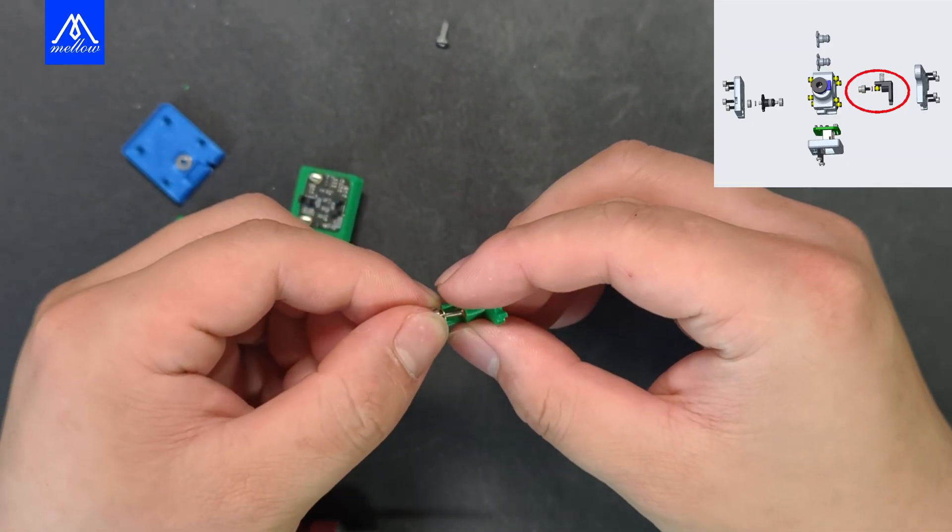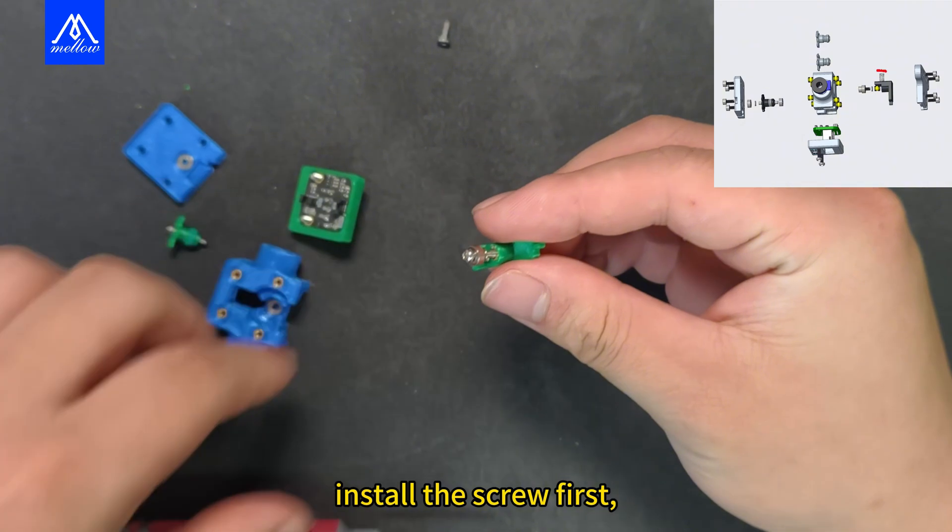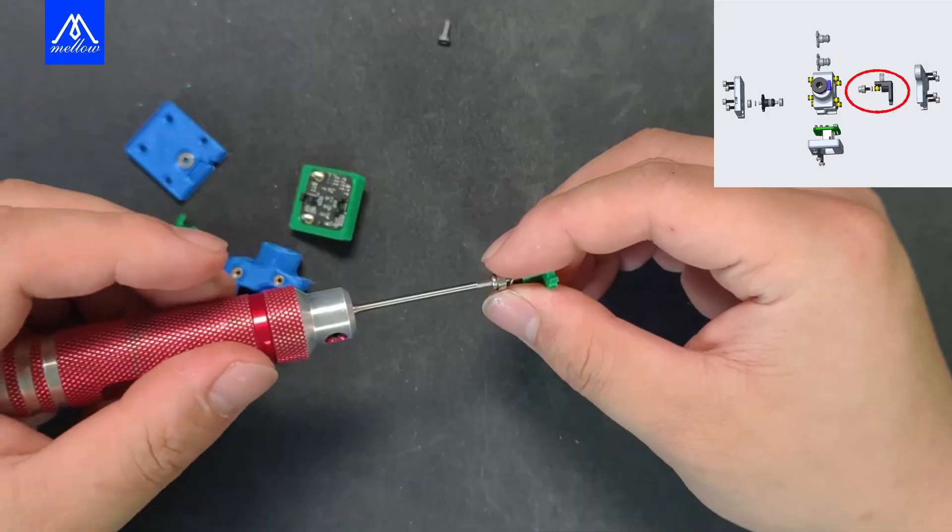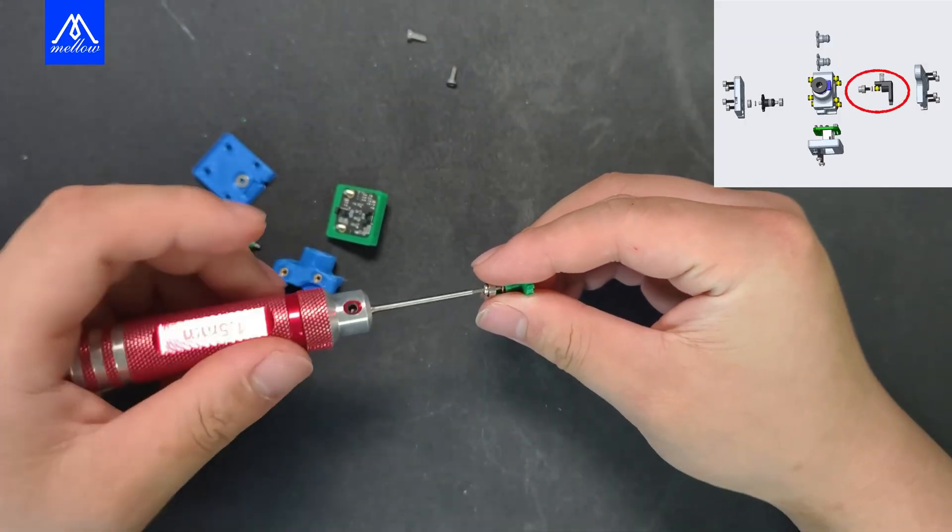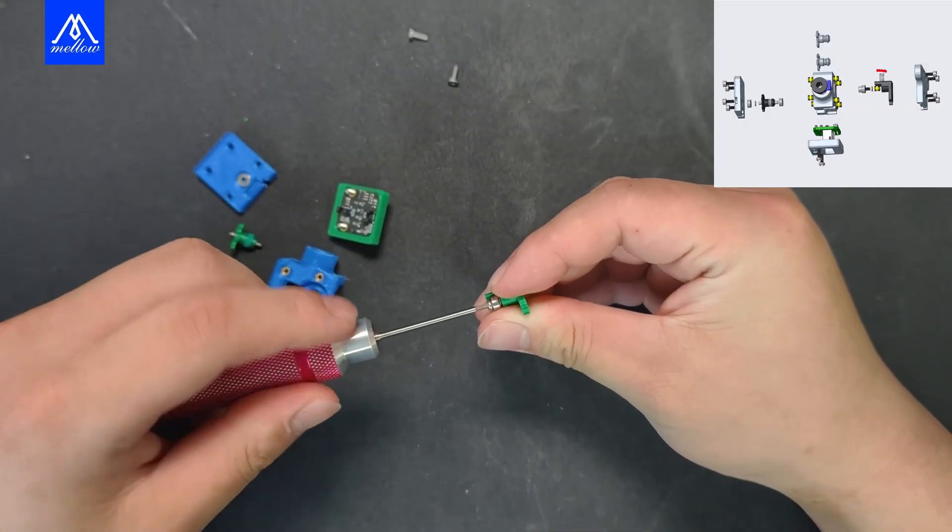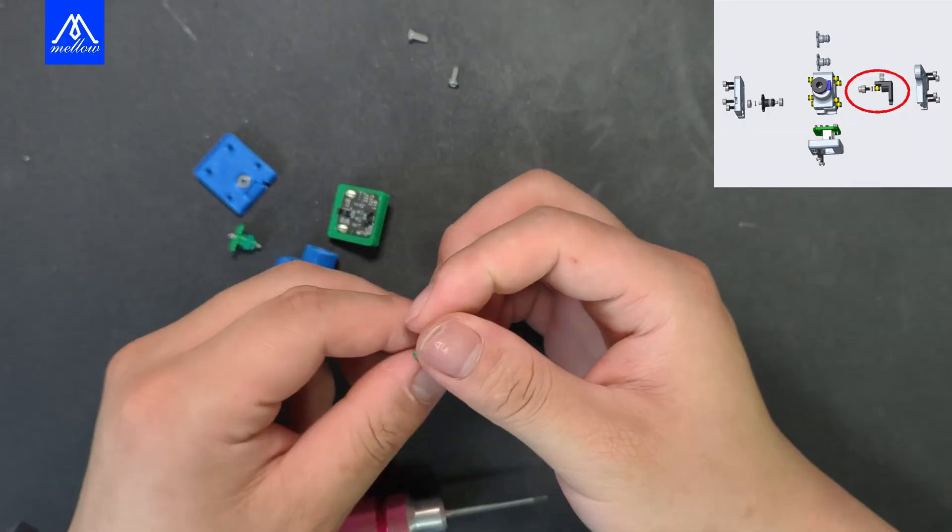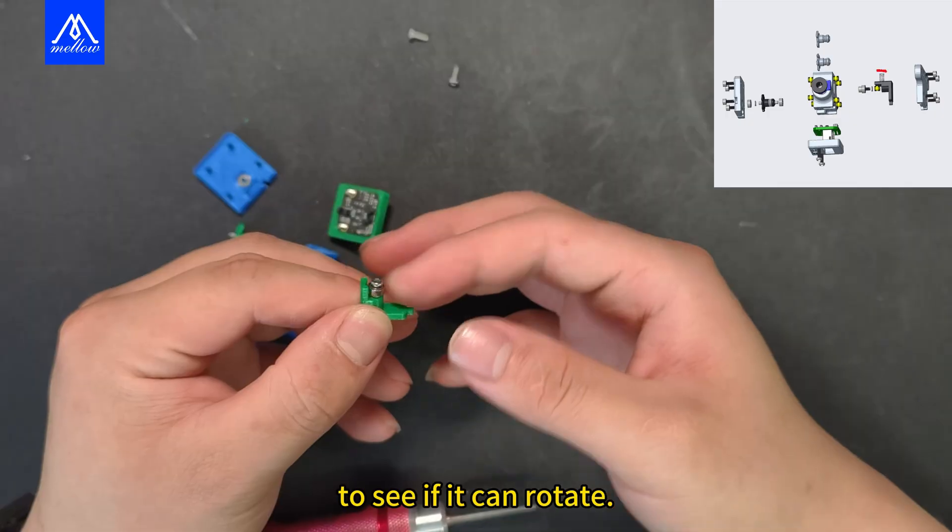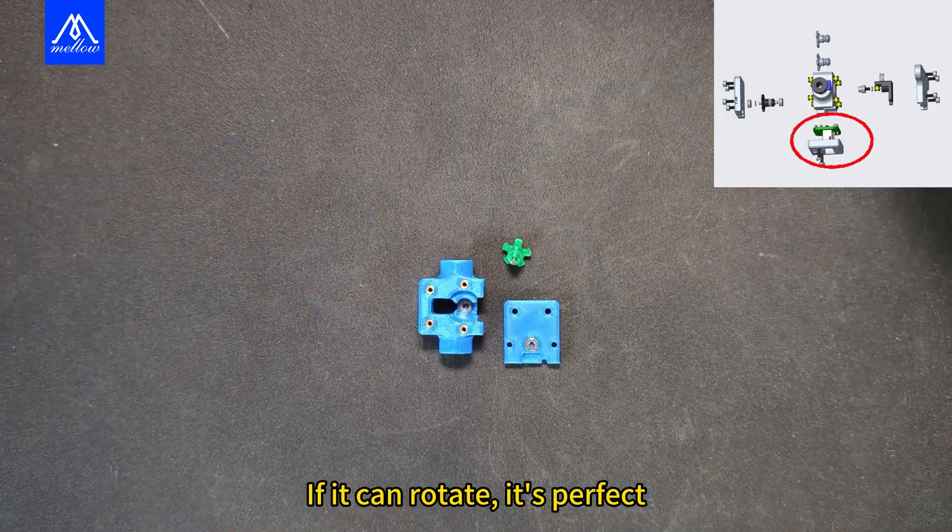Then take out the printed part and install the screw first. Then take out our 1.5mm screwdriver and screw it on. After tightening, we need to rotate it to see if it can rotate. If it can rotate, it's perfect.